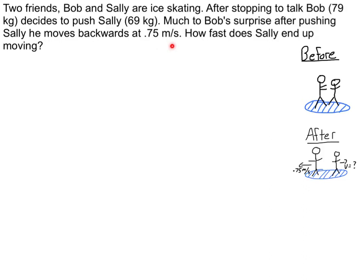So we look at what's going on initially. Initially, they are together. Whenever Bob pushes Sally, they are one object at rest. They stopped to talk. And then Bob pushes Sally, so the one object then splits up into two separate ones going opposite directions. That is a classic example of an explosion problem.